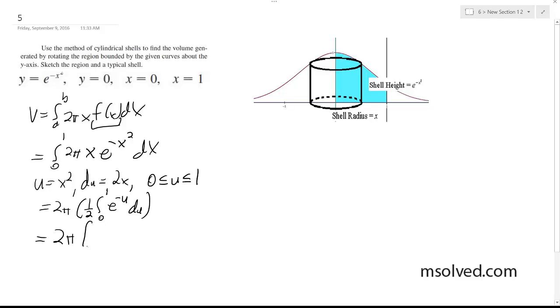All right, 2π negative e to the negative u over 2 from 0 to 1, we get 2π, e minus 1, 1 over 2.